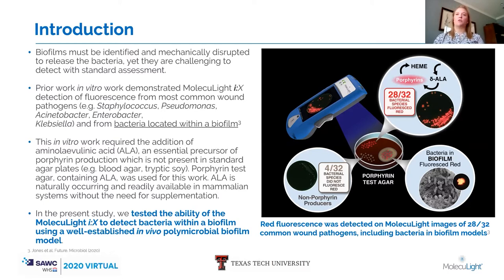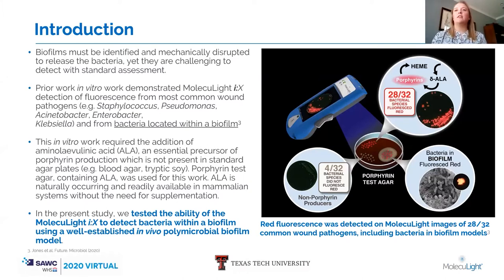Our previous work has shown that if you supplement the in vitro polymicrobial model with ALA, the bacteria are able to uptake the ALA through the EPS matrix of the polymicrobial biofilm, which will induce porphyrin production and then fluorescence, which is then detectable with the Moleculite device. This is important because ALA is able to be taken up through the biofilm matrix and the fluorescent signal associated with porphyrin production is also detectable through the EPS matrix. The matrix itself doesn't appear to be quenching any kind of signal.